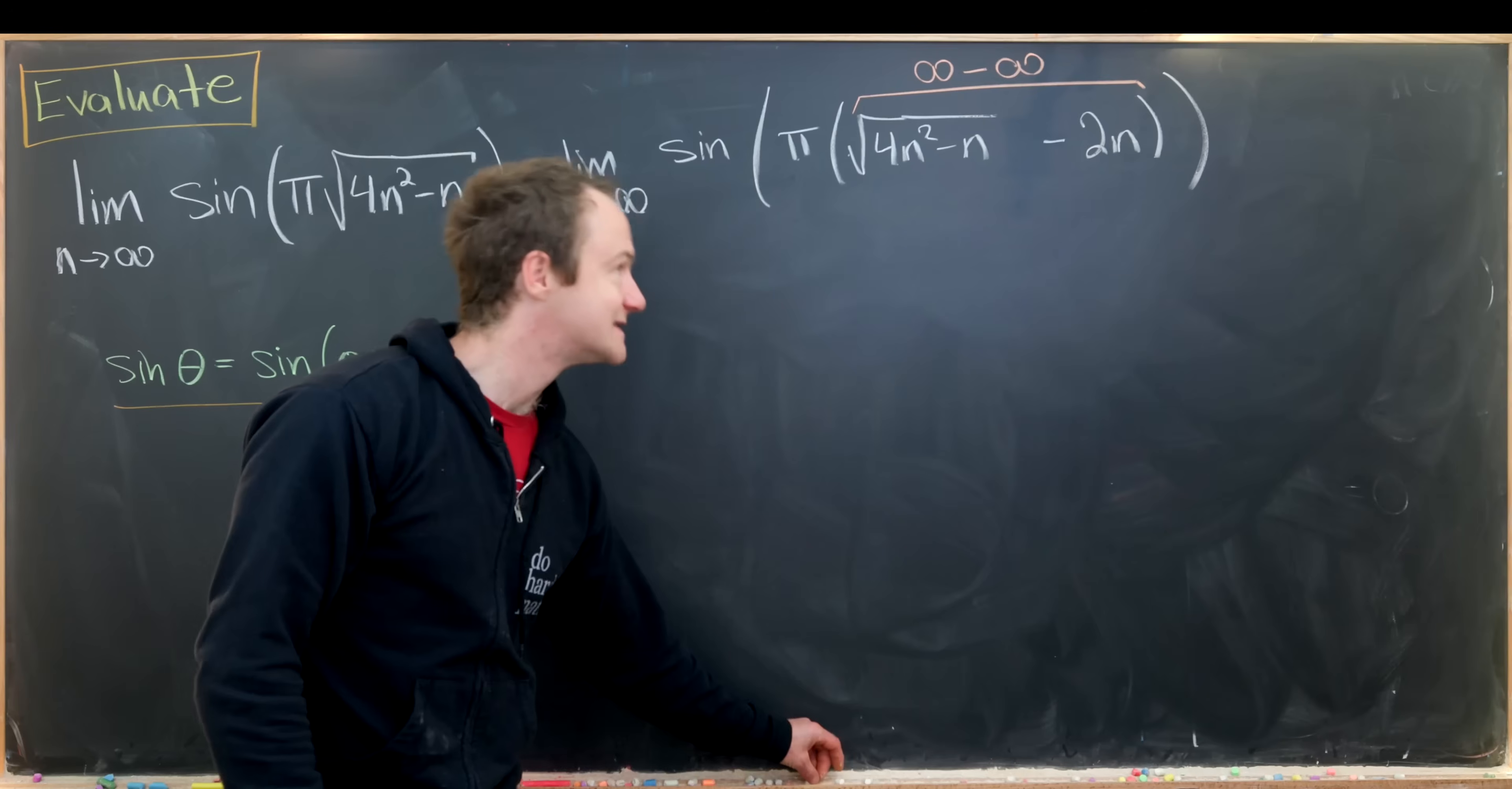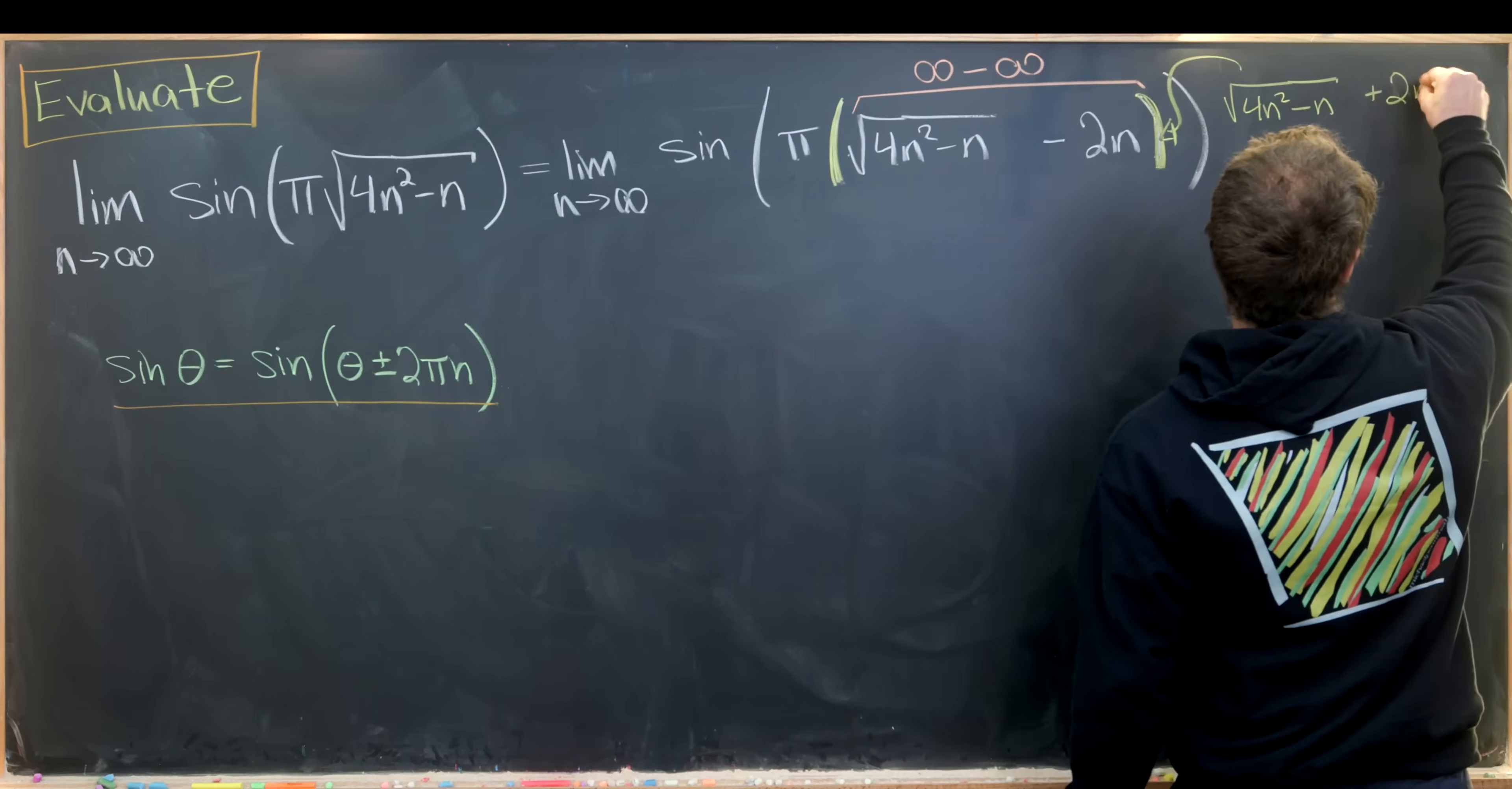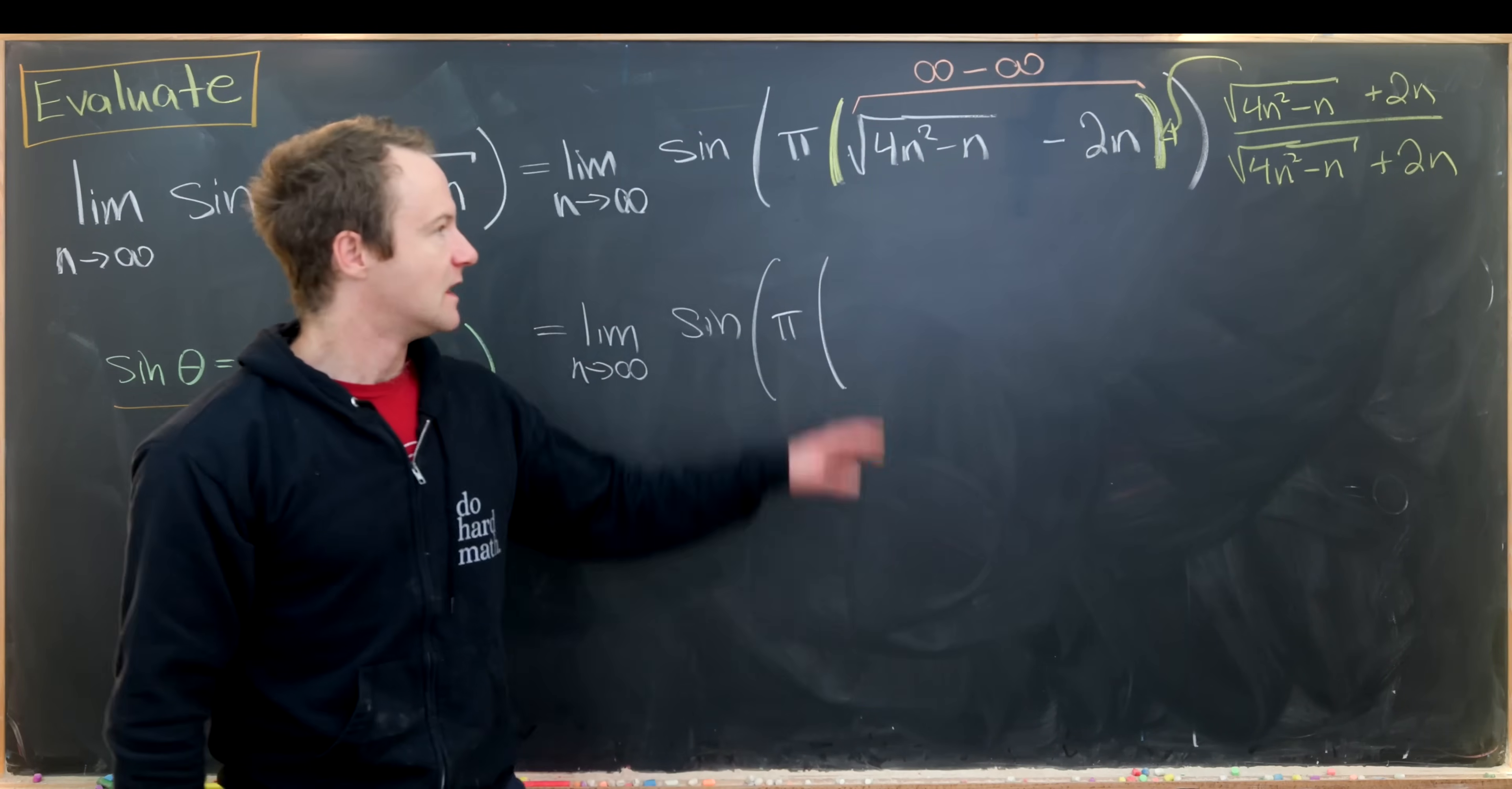So in other words I can take this thing in here and I'll multiply by the following object. So it'll be the square root of 4n squared minus n plus 2n over the square root of 4n squared minus n plus 2n. So we're going to be left with the limit as n approaches infinity. And then I have sine of pi times a bunch of stuff now.